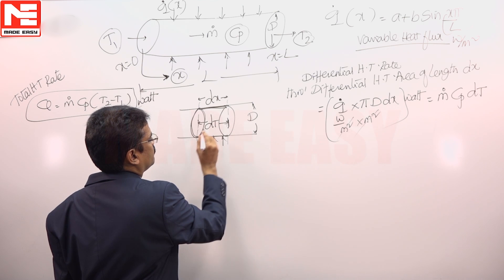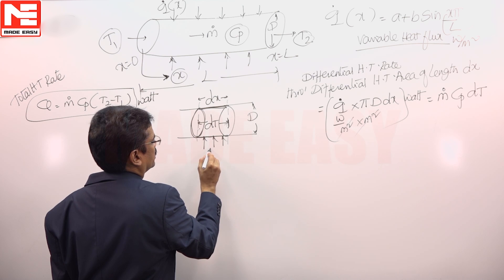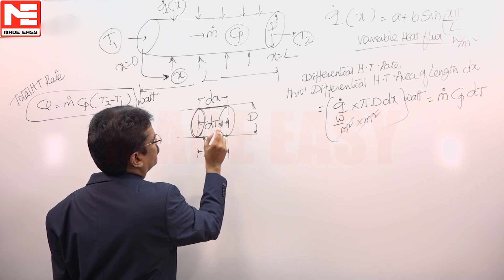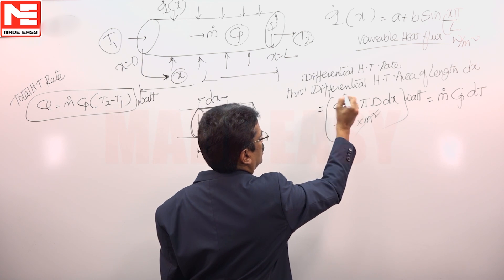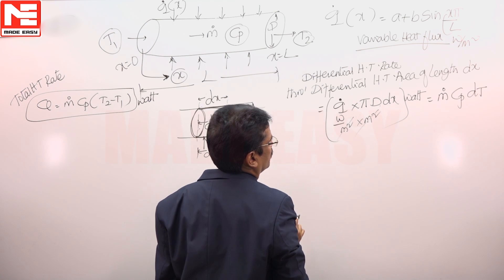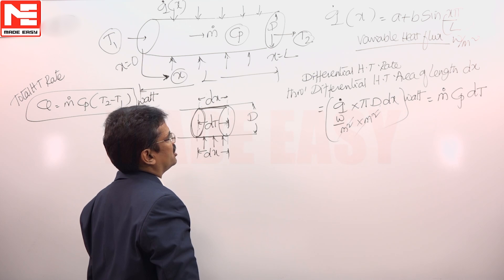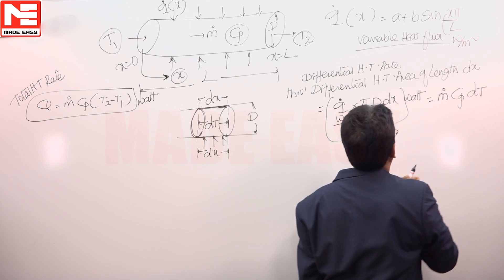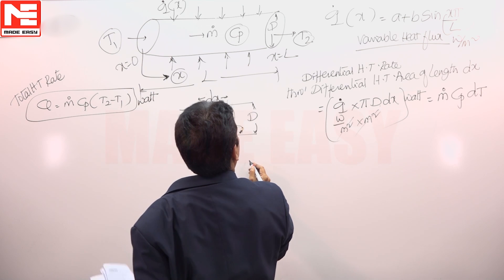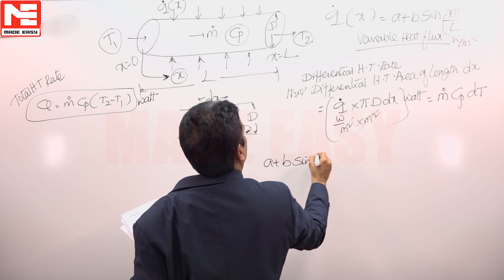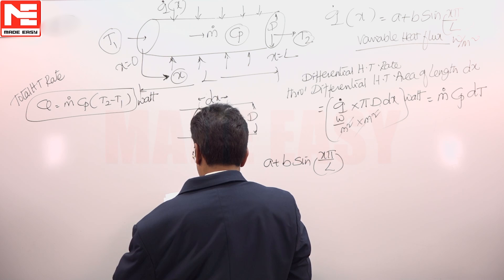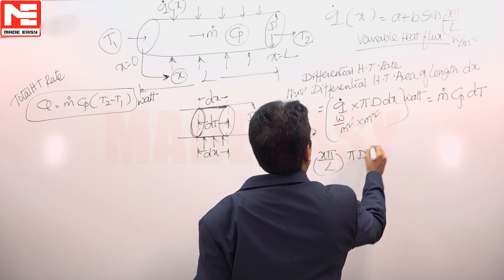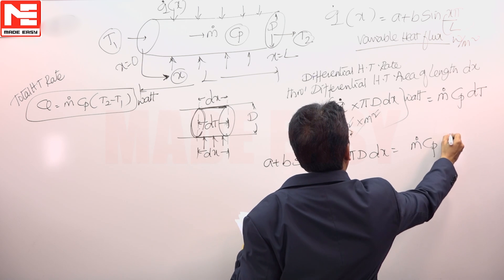ṁCp·dT indicates the differential change in enthalpy of the fluid as it travels a distance dx. For that distance, the enthalpy change equals the differential heat transfer rate Q̇·πD·dx. This is the energy balance, because thermodynamics states that heat transferred in a constant pressure (isobaric) process equals the change in enthalpy. Since Q̇ is a function of x, we substitute A + B·sin(πx/L), giving: (A + B·sin(πx/L))·πD·dx = ṁCp·dT.